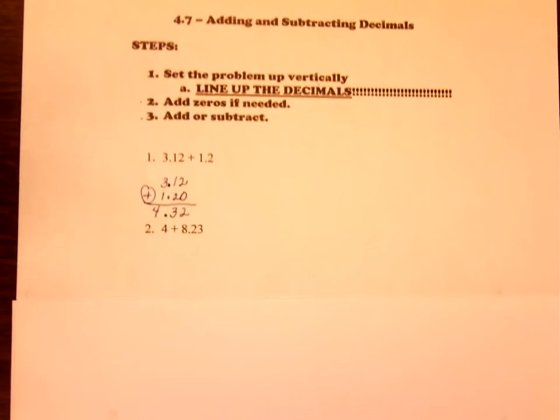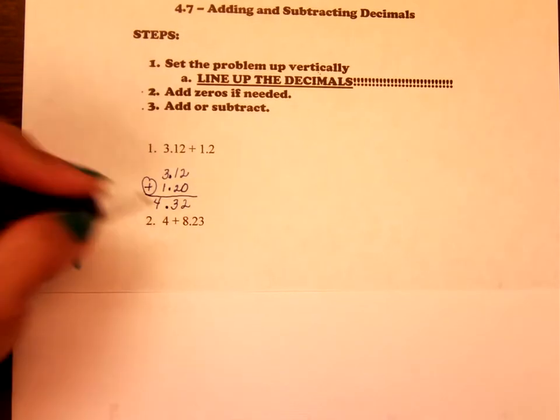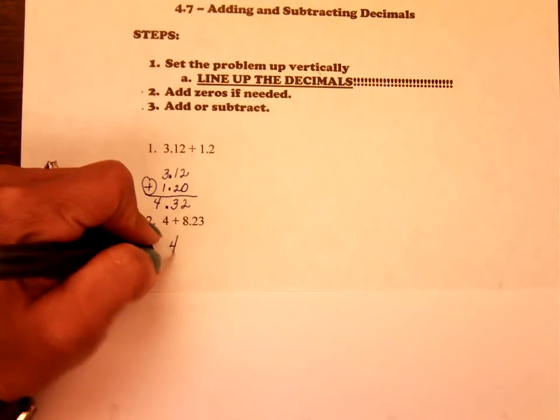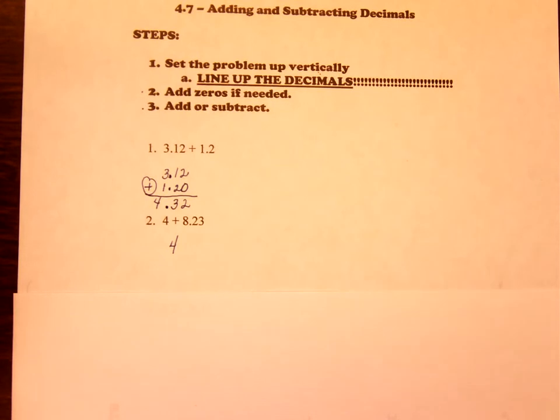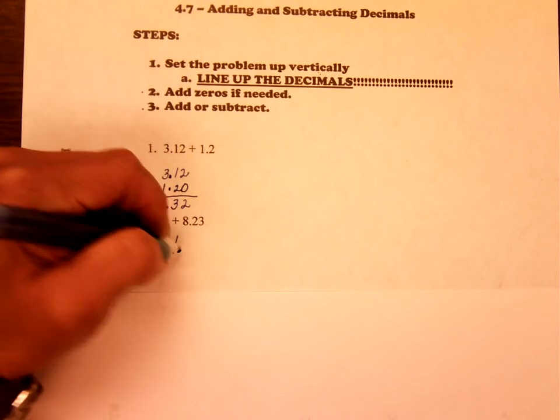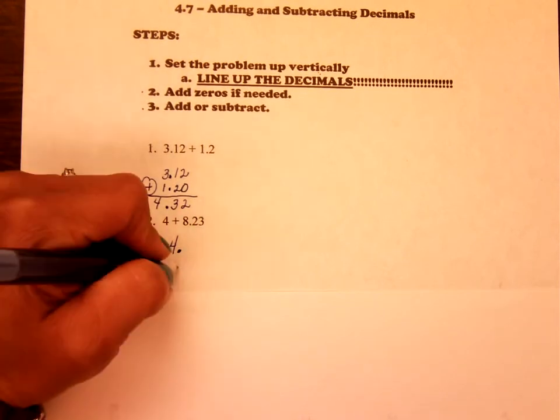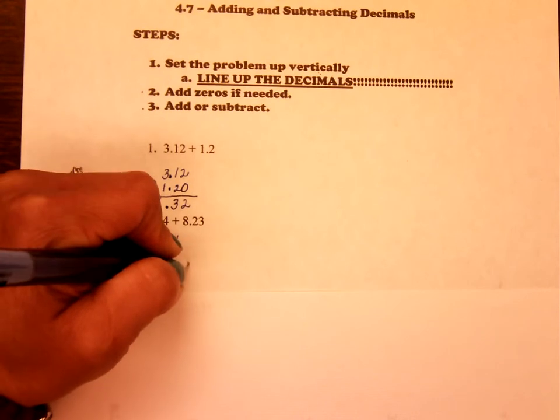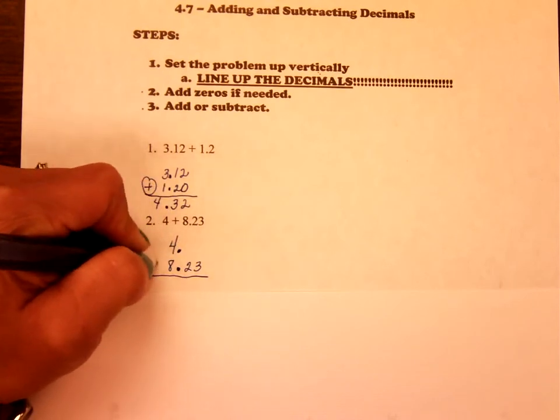So look at step two, problem number two. A whole number 4. If it's a whole number 4, think of it as like $4. Well, where would the decimal be? It would be right here after the 4. So then you have, with your decimal, the 8 is in front, and then the 23, you're adding.